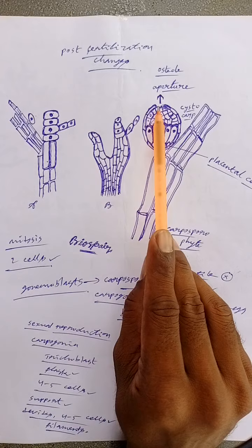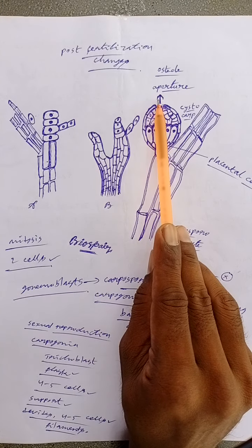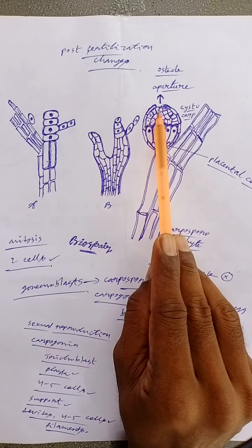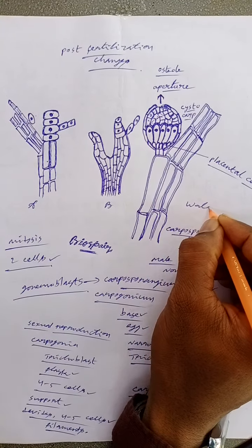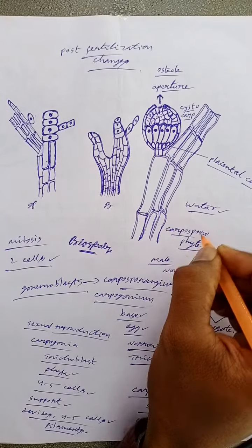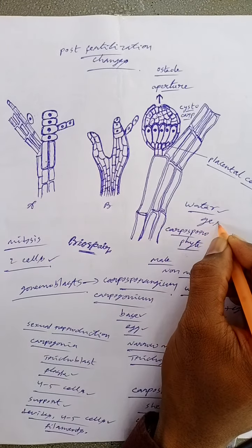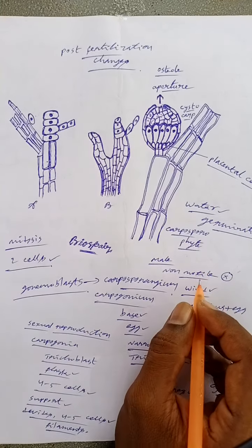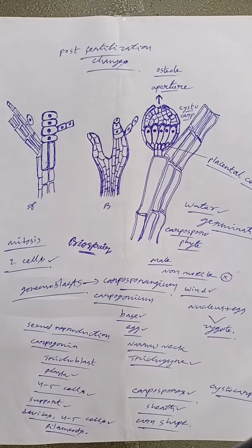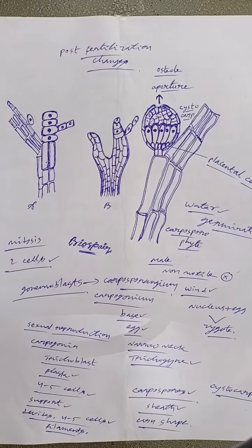On germination they form a diploid asexual thallus that is tetrasporophyte. In this way these are the post-fertilization changes that we can observe in this polysiphonia. Thank you.